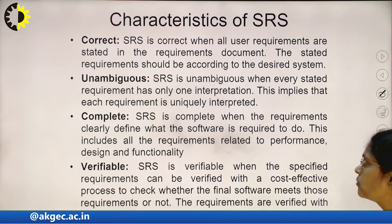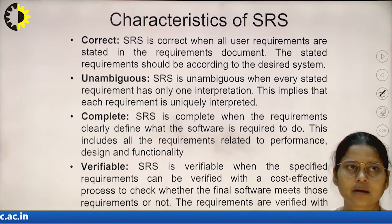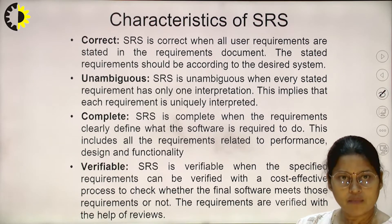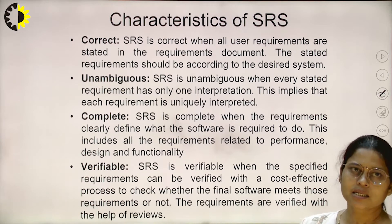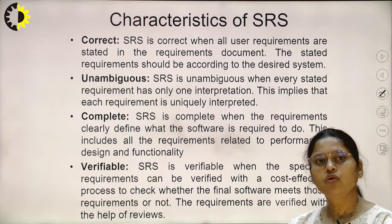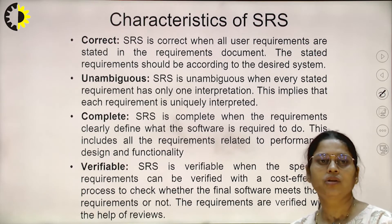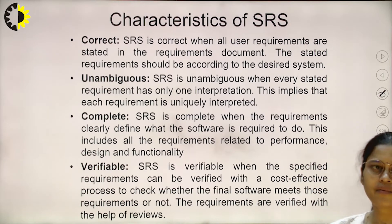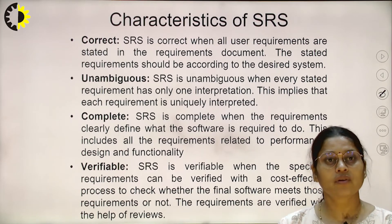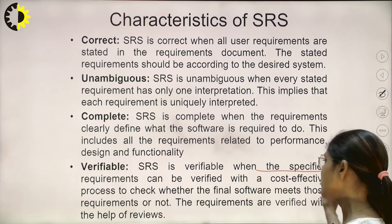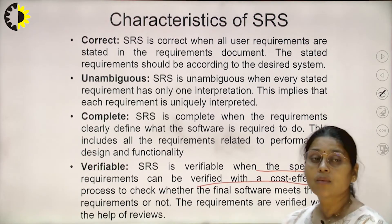These are some characteristics of the SRS. SRS should be correct — it is correct when all the requirements are stated in the requirement document. It should be unambiguous, meaning each and every requirement has only one interpretation and there will be no contradiction between the requirements. Third, SRS should be complete — SRS is complete when requirements are clearly defined as to what the software is required to do. Next, it should be verifiable — SRS is verifiable when the specified requirements can be verified in a cost-effective manner.